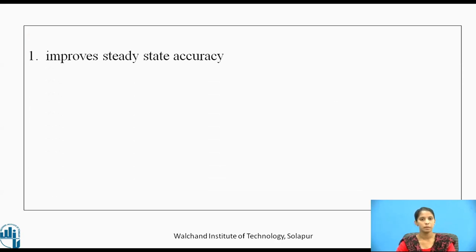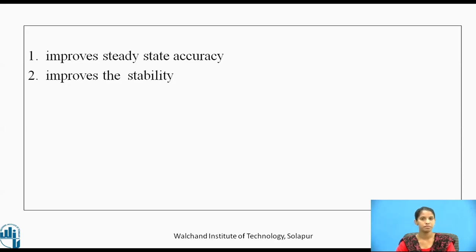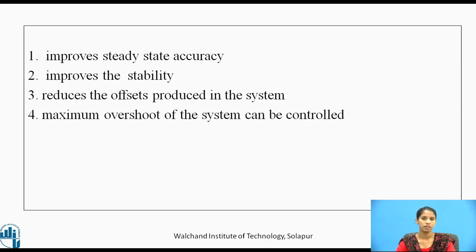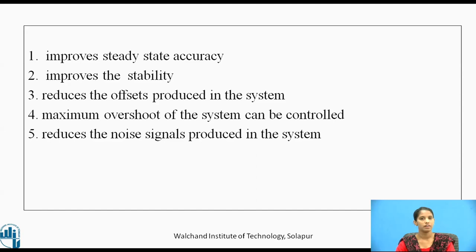A controller is required in a control system because it improves the steady state accuracy, it improves the stability of the system, reduces the offset produced within the system, the maximum overshoot of the system can be controlled, and it reduces the noise signals produced in the system.